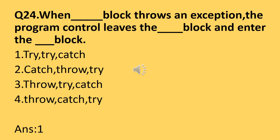Question number twenty-four: when a try block throws an exception, the program control leaves the try block and enters the catch block. An exception is an error object that transmits information to the compiler about what type of error occurred in the program. C++ provides exception handlers: try, catch, and throw. The try block detects the exception and throws it to the catch block using the throw keyword. The catch block finds the exception type and displays an error message. So the answer is: try block throws, catch block receives.